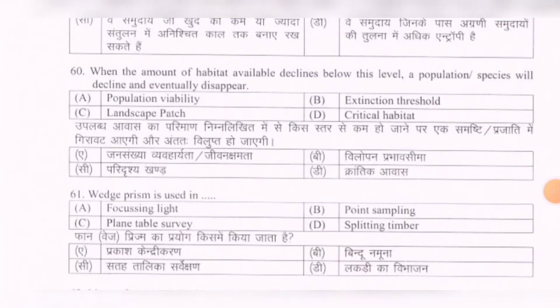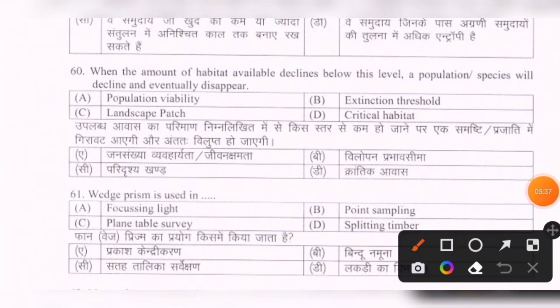Next question: When the amount of habitat available declines below a certain level, a population or species will decline and eventually disappear. This level is called — options are: population viability, extinction threshold, landscape patch, critical habitat. The correct option is B — extinction threshold.